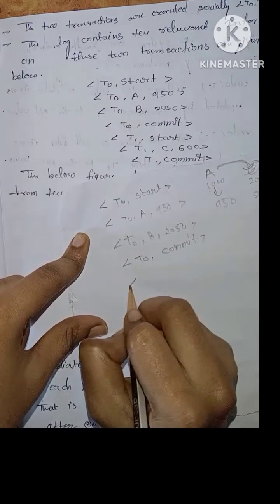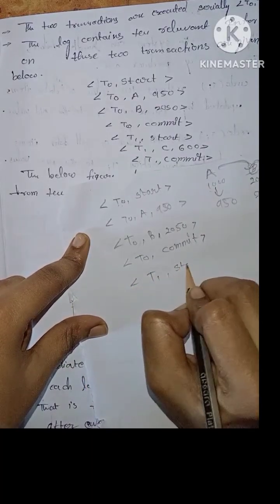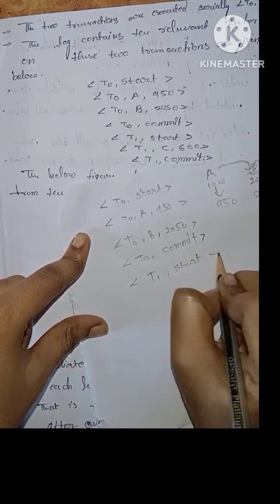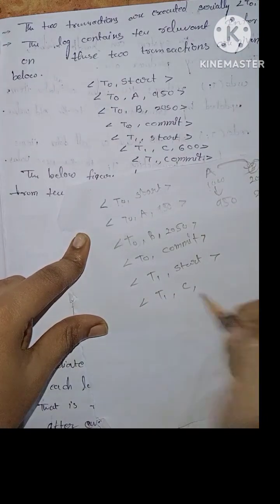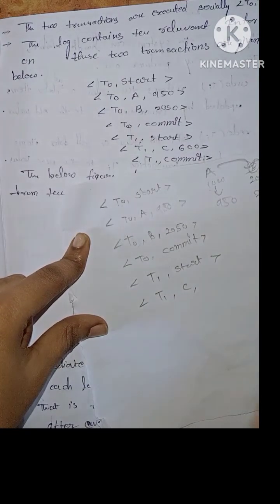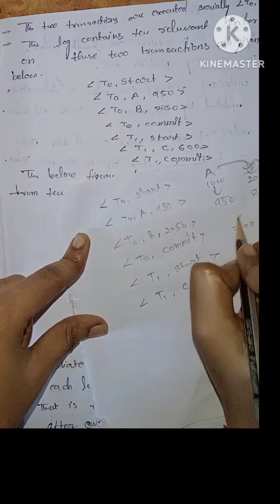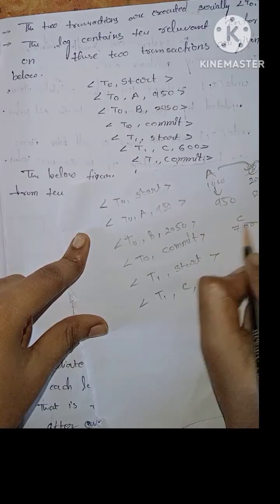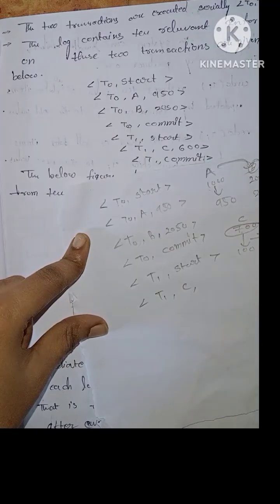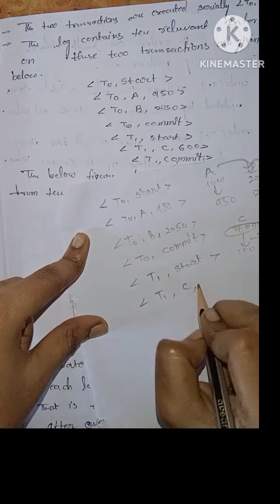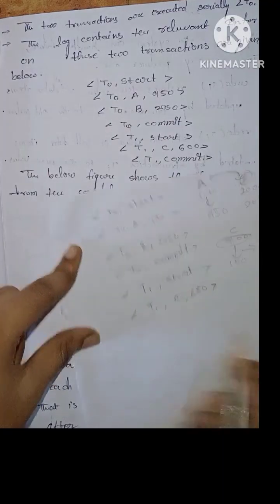Next, T1 transaction: T1 start. For account C, the original value is 700. We withdraw 100, so C becomes 650. This completes the T1 log entries.